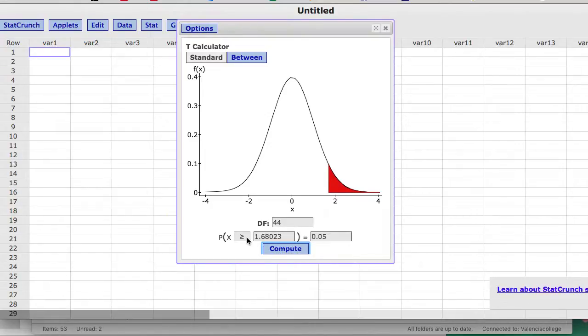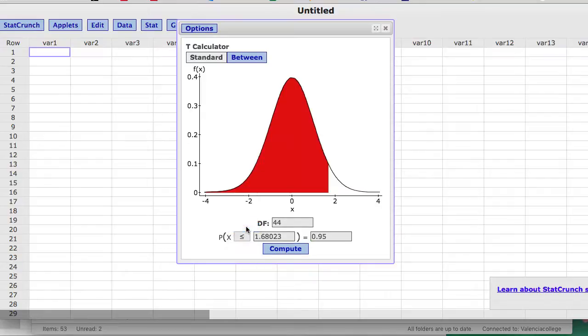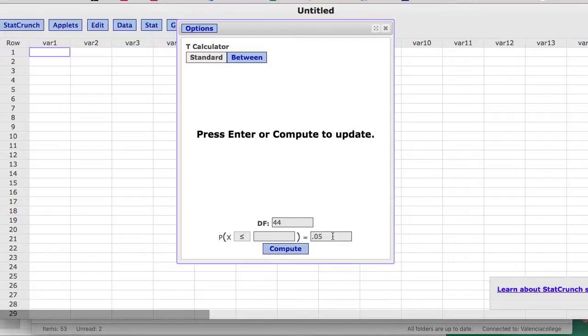Or obviously, if I'm doing the left tail, and I choose left tail, and let's say I want 5% in the left tail, so I would type 0.05, again, have my degrees of freedom here.